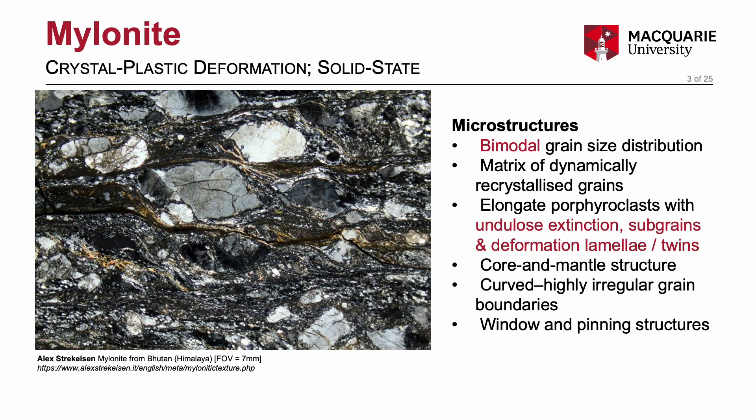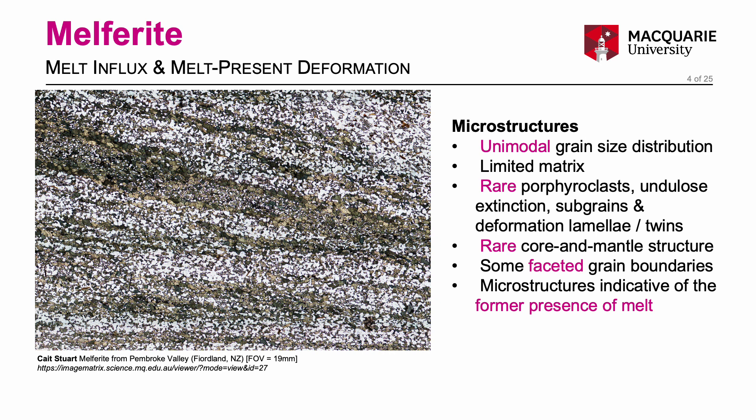This is a classic mylonite from the Himalaya. The key features are a bimodal grain size distribution where there is a fine matrix of dynamically recrystallized grains. Porphyroclasts show internal deformation microstructures. Contrast this photomicrograph of a typical mylonite with the microstructure in a melphorite high strain zone. The microstructure of melt flux high strain zones or melphorite have unimodal grain size distribution and lack most other features common to typical mylonite.